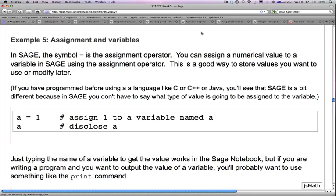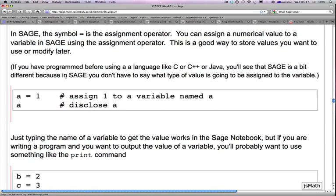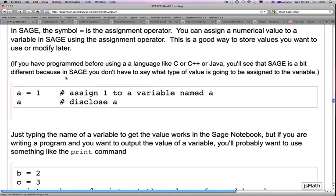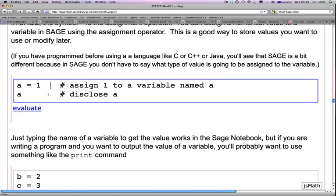Example 5 is about assignment and variables. In SAGE, the symbol equals is the assignment operator. You can assign a numerical value to a variable in SAGE using the assignment operator. This is a good way to store values you want to use or modify later. If you've programmed before using a language like C or C++ or Java, you will see that SAGE is a bit different because in SAGE you don't have to say what type of value is going to be assigned to the variable. That makes things easier. In this expression, the first line says a equals 1 and the comment says we are assigning 1 to a variable named a.